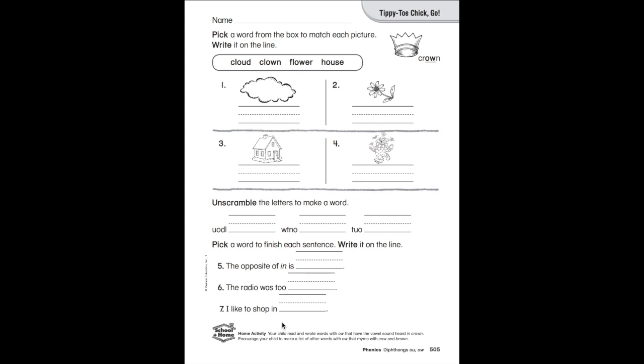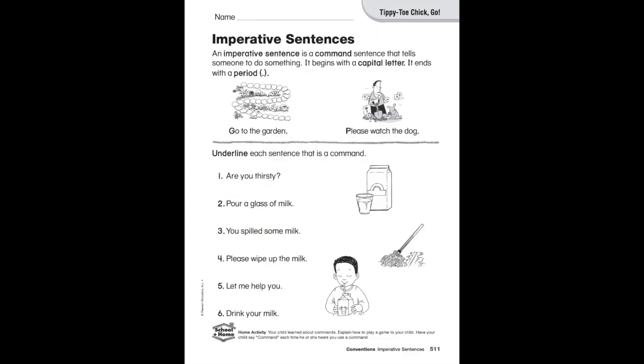Imperative sentences. Let's see what that is. An imperative sentence is a command sentence that tells someone to do something. It begins with a capital letter and ends with a period. Here's an example: 'Go to the garden.' That's telling you to go somewhere—that is an imperative sentence. It ends in a period, starts with a capital letter. 'Please watch the dog.' It's asking you nicely to do something, ends in a period, starts with a capital P. Underline each sentence that is a command.